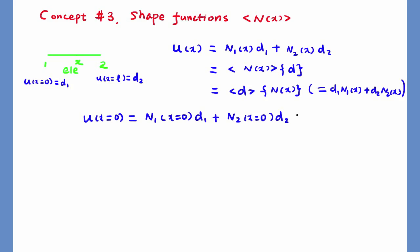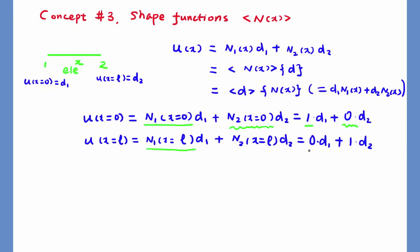This is a very useful property for shape function. That is, shape function at any node has a value of 1 at that node and a value of 0 at all other nodes.